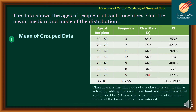Now that we know the class marks, we multiply the frequency by the class mark to get f×x. For example, 3 times 84.5 equals 253.5; 7 times 74.5 equals 521.5; 11 times 64.5 equals 709.5. Continuing the process through 5 times 24.5 equals 122.5. Adding all products from 253.5 to 122.5, the summation of f×x equals 2937.5.